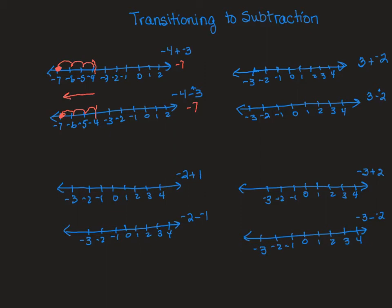Let's look at the problems to the right. Now I'm starting at positive 3, and we talked about adding signs that were different. I'm adding a negative, so a negative goes in the negative direction. I'm going 2 negatives, and my answer is positive 1. At the bottom, instead of adding a negative, I'm subtracting a positive. 3 minus 2 — subtraction goes to the left 2 spaces — and my answer is 1.